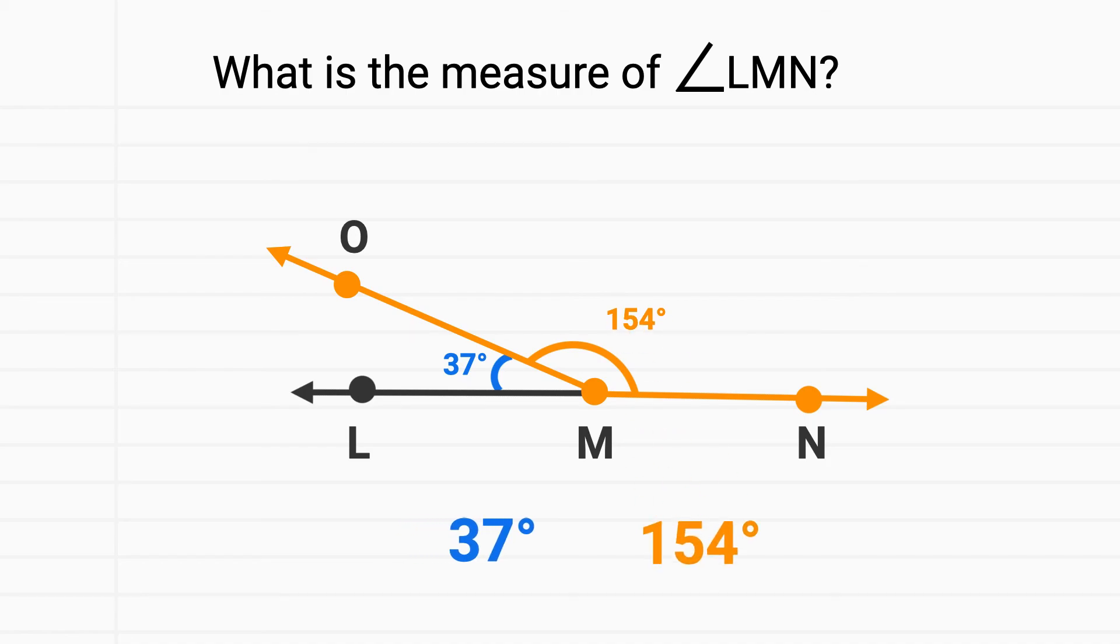To find angle LMN, we'll add them both together. 37 plus 154 equals 181.